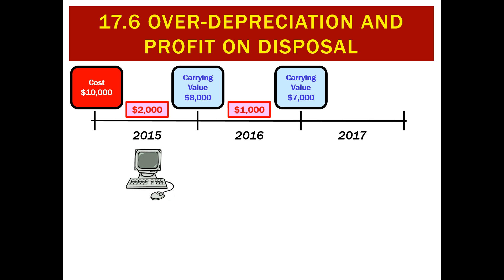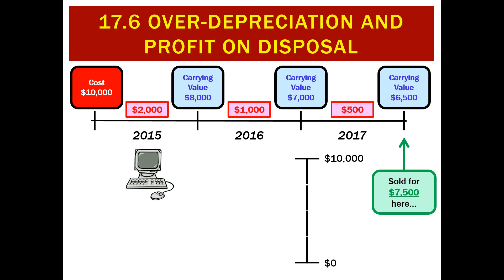That gave us a carrying value of $7,000. Then we've got a depreciation in the third year of $500, which gave us a carrying value of $6,500. So when we dispose of this asset, what we're hoping is we will get at least $6,500 — that's how many unused economic benefits we think are left. We might get more, we might get less, but that's our starting point.